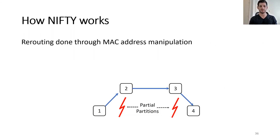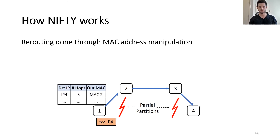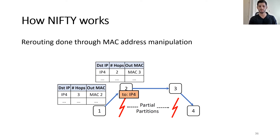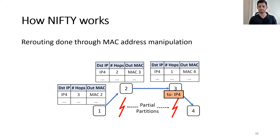Let's take a look at an example of Nifty. This graph shows four nodes with two partitions such that the only way for node 1 to contact node 4 is through nodes 2 and 3. Nifty works by changing the MAC address from node 4's MAC address to node 2's MAC address at node 1, so that when node 1 sends the message out, it's received by node 2. Node 2 has similar rules in its forwarding table, so it forwards to node 3, and finally node 3 forwards the message to its final destination, node 4.